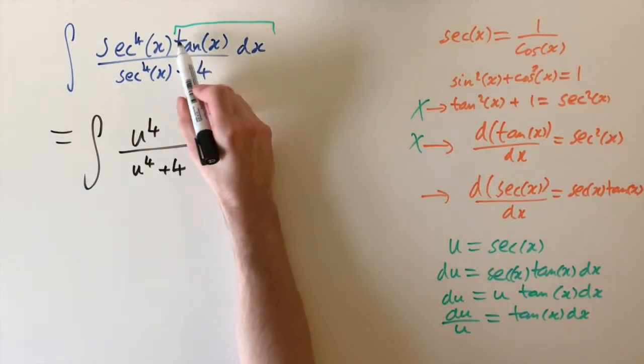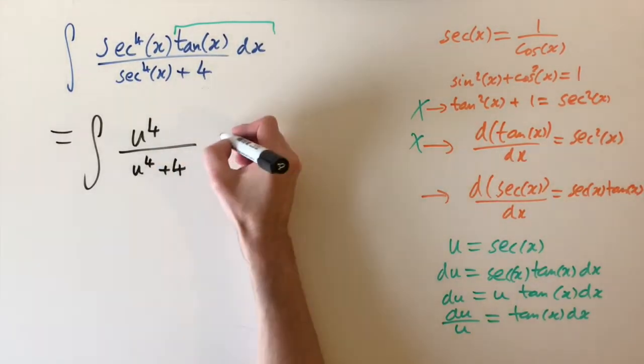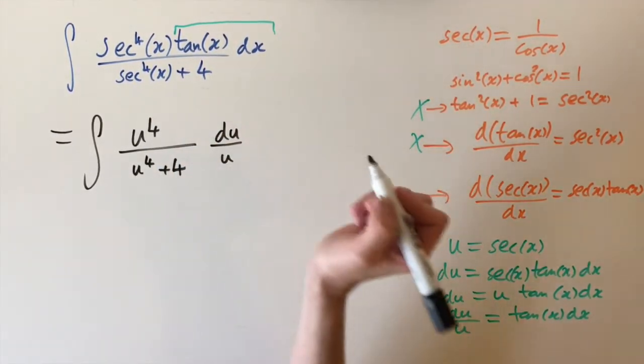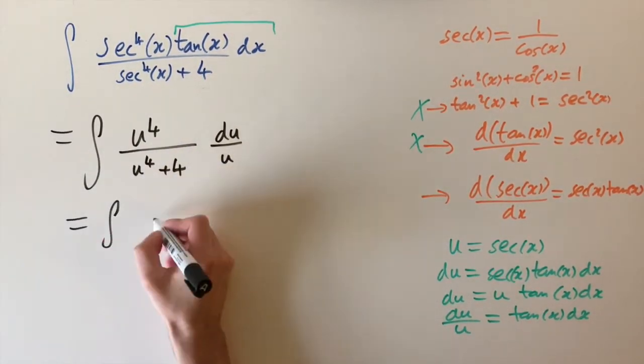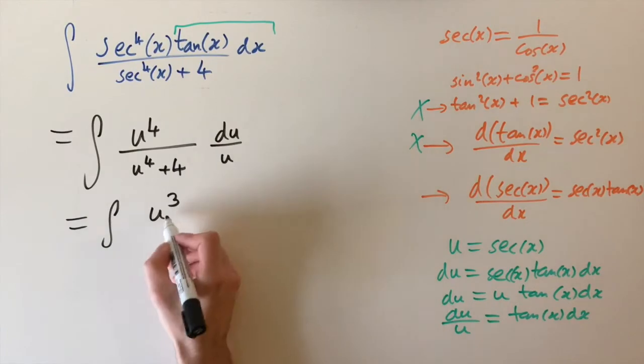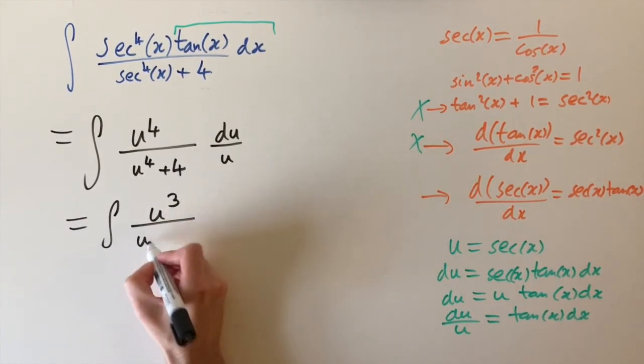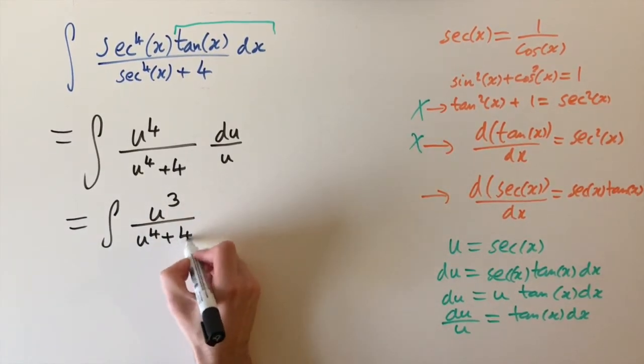And then if we group these last two terms, we can replace them by du divided by u. And then this u is going to cancel with one of the u's on the top. So this is the same as u cubed, u to the power of three, divided by u to the power of four plus four du.